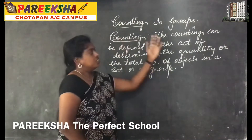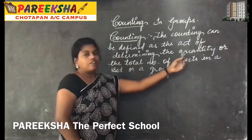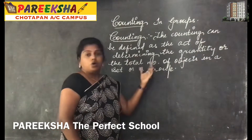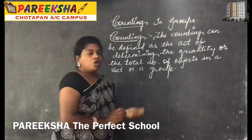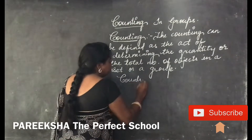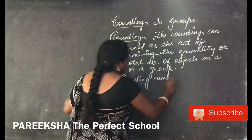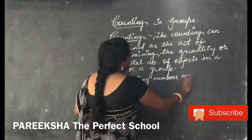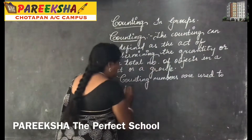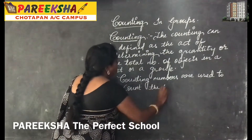Look at your channel everybody. The counting can be defined as the act of determining the quantity or the total number of objects in a group or set. Counting numbers are used to count the objects.